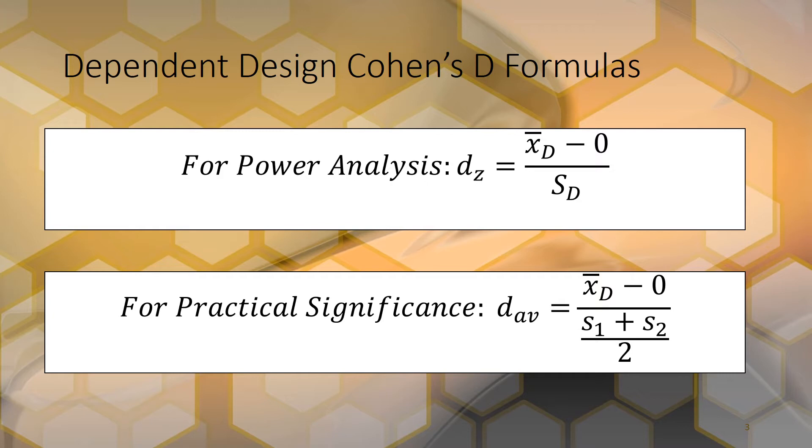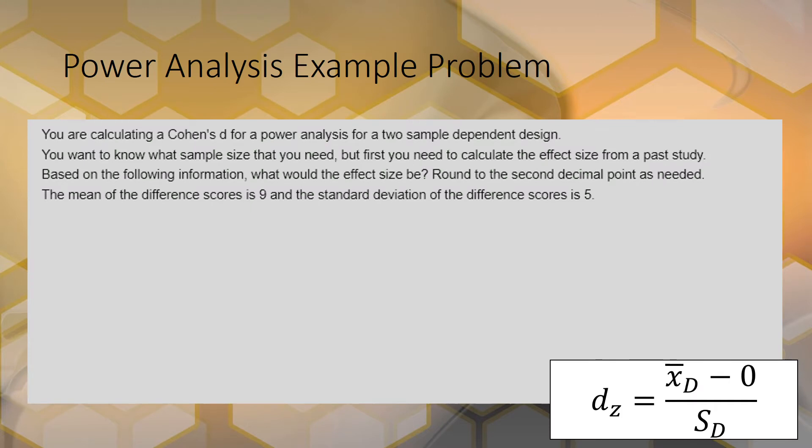The first formula is for when you have a power analysis. So it's an example - you're calculating a Cohen's D for a power analysis for a two-sample dependent design.